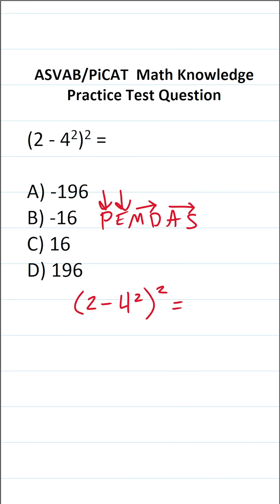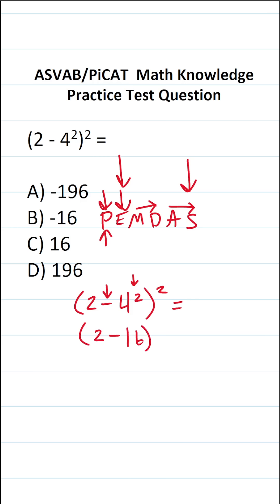If we take a look, we have something in parentheses — more specifically, we have subtraction and an exponent inside parentheses. Of course, we're going to do our exponent before our subtraction. So this becomes 2 minus 4 squared. 4 squared is the same thing as 4 times 4, or 16.